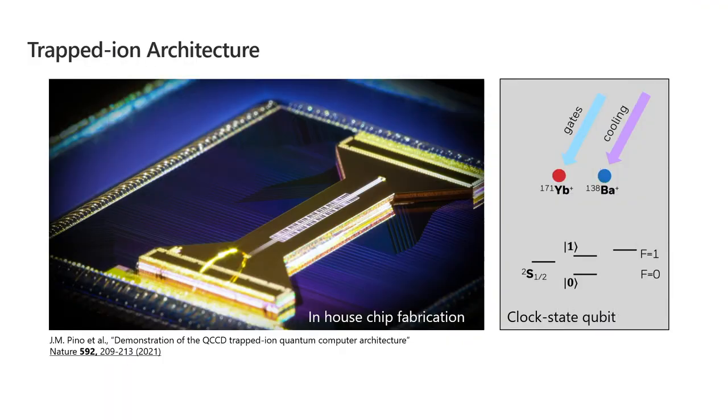Our computer is based on trapped atomic ions. Our qubit is the two internal states of a ytterbium-171 ion. And we use ions just because once an electron has been ripped off an atom, they're easy to grab onto and move around by applying voltages to those little rectangles on that chip shown on the left there.